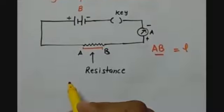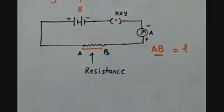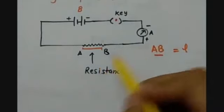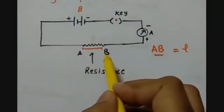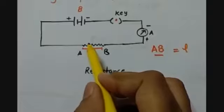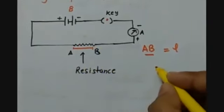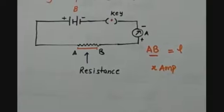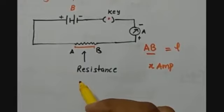The first thing we have to do is close the key and measure the current flowing in the circuit when AB length of the conductor is joined in the circuit diagram. Suppose that value comes out to be X ampere. I am not giving it a specific value because this is not an experiment we are actually doing — this is just a theory-based class.